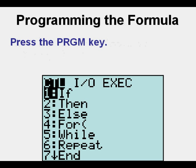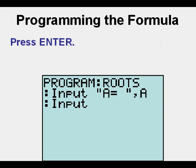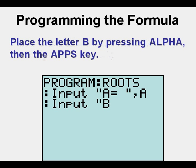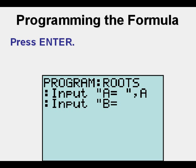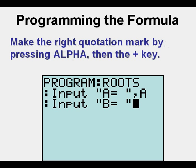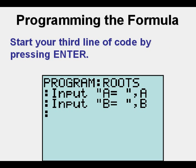Go to the next line of code by pressing Enter. Press the program key, then arrow once to the right for the input/output menu and press Enter. Place a quotation mark by pressing Alpha, then the plus key. Place the letter B by pressing Alpha, then the Apps key just to the right of the Math key. Go to the Test menu by pressing Second, then Math, and press Enter. Make a space by pressing Alpha, then the zero key. Make the right quotation mark, then press the comma key. Create the B character by pressing Alpha, then the Apps key.